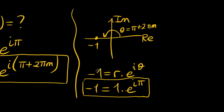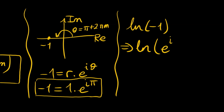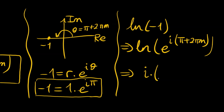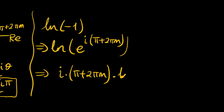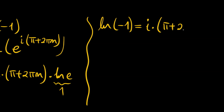We can write negative 1 as e to the power of i·π principally, but more generally we should add 2πm. So ln of negative 1 becomes ln of e to the power of i(π + 2πm), where m is an integer. We bring down the exponent: i times (π + 2πm) times ln e, which is 1. So ln(−1) = i(π + 2πm).